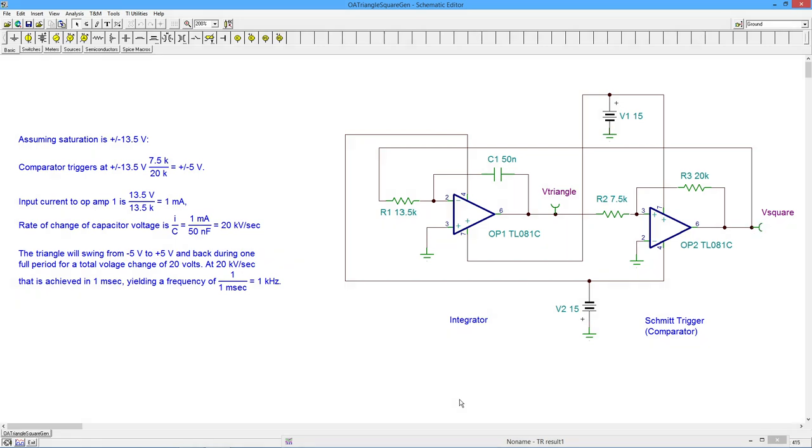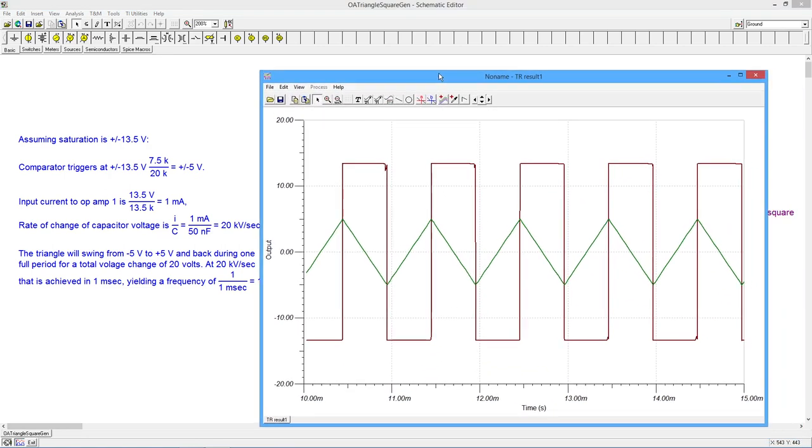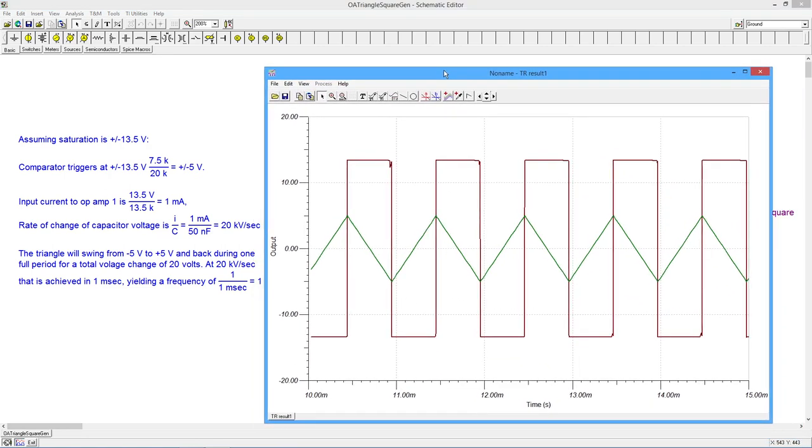So we do a little transient analysis on this. And here is what we get. So you can see this triangle wave is coming up. We get to a certain value, we get to this plus 5 volts. And then the output of the comparator changes state. It goes high.